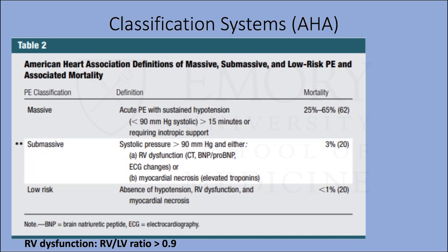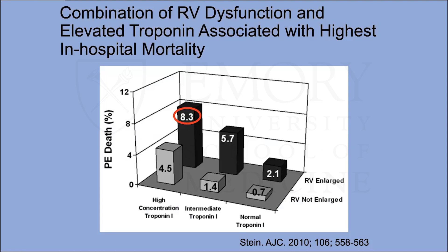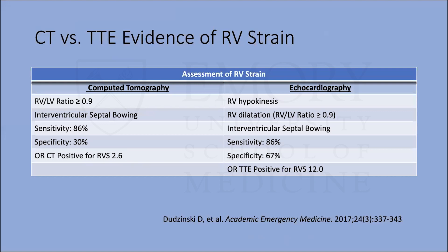Data shows that patients with both elevated troponin and RV enlargement have worse prognosis — higher in-hospital PE mortality — compared to either marker alone. CT is our first pass for diagnosing PE, so a study compared CT diagnosis of RV strain to echocardiography, looking at a composite outcome of severe clinical deterioration, need for advanced therapy, thrombolysis, thrombectomy, or death within five days.